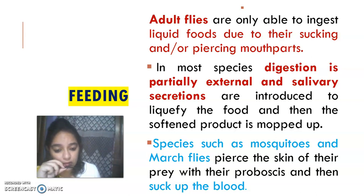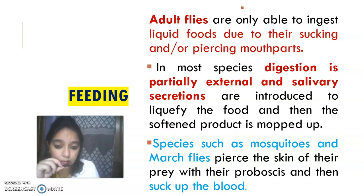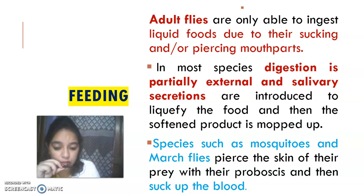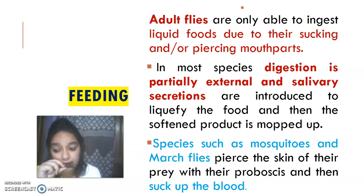The house fly cannot feed directly on solid food. First it must liquefy the food. It does this with its sponging mouthparts — salivary gland enzymes are poured out onto the food, which liquefies it. Then the sponging mouthparts absorb the liquefied food. So this is called partially external digestion — because some digestion has already occurred outside the body before the food is taken in.